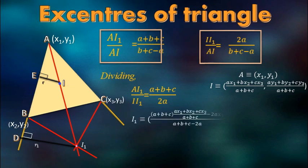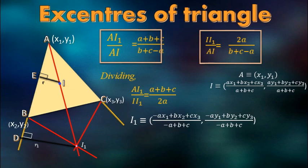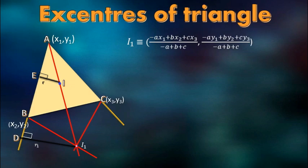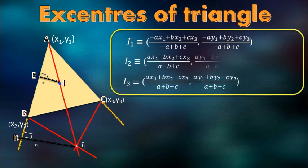Applying the section formula for external division, we can easily find the coordinate of the excenter. You must also remember that there must be three coordinates. For the coordinate with respect to angle B and angle C will be I2 and I3 respectively. The coordinate of the excenter whose internal angle bisector is taken into account has the coefficient of that angle side with a negative sign.